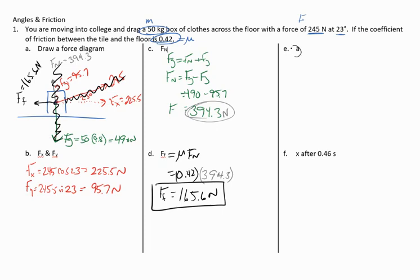I can find the acceleration by saying that F equals MA. The net force, or the sum of all of the forces, has to equal the mass times the acceleration. That X component minus the force of friction will equal MA. I'll take 225.5 minus 165.6 equals the mass 50 times A. Subtract those two, divide by 50, and the acceleration comes out to be 1.198 meters per second squared.